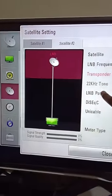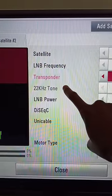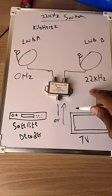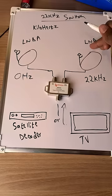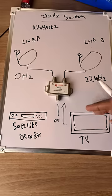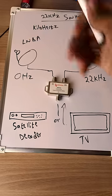There are some small settings to perform on either your decoder or your TV. So when a 22 kilohertz signal is supplied, it will take signals from your satellite dish B. And when nothing is supplied, it will take signals from your satellite dish A.